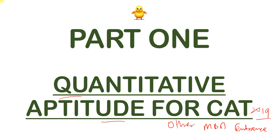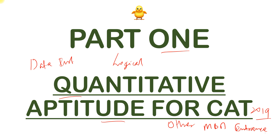In addition to the quantitative aptitude series, I will also be covering data interpretation and logical reasoning series. This is part one of quantitative aptitude, followed by parts two, three, four, five, six, then data interpretation parts, and logical reasoning parts.